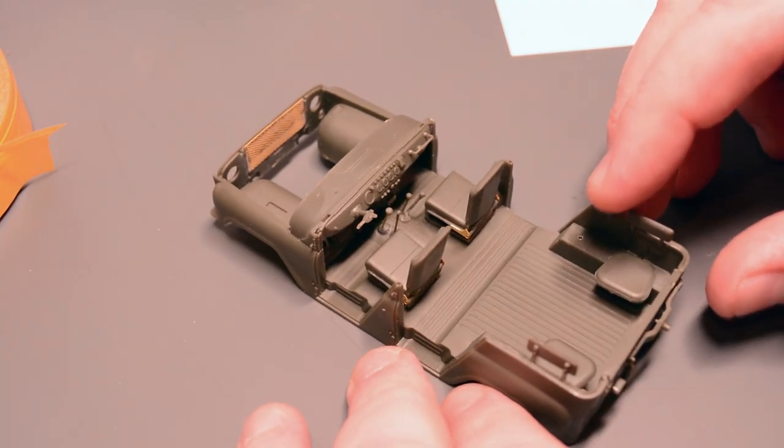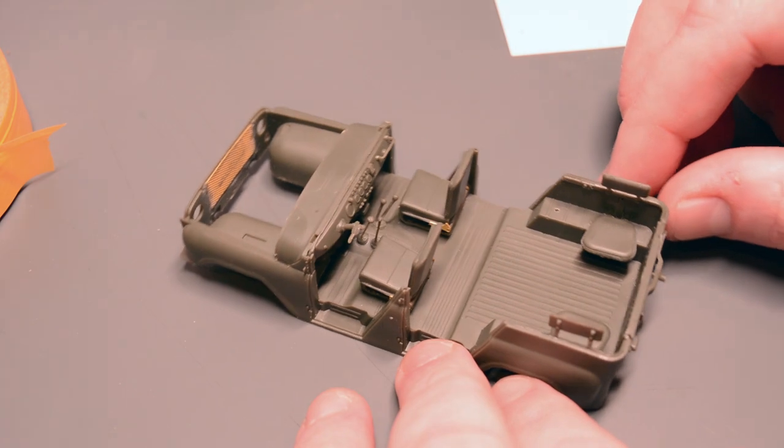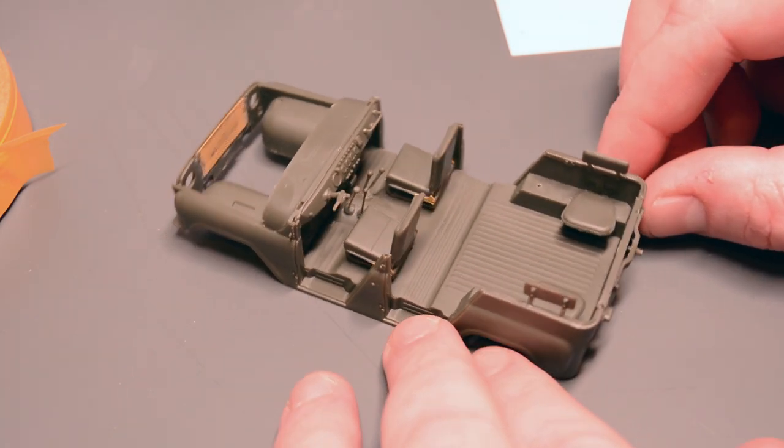Normally the kit manufacturers would sort of cut corners in these areas and have a big blocky piece under the seat.